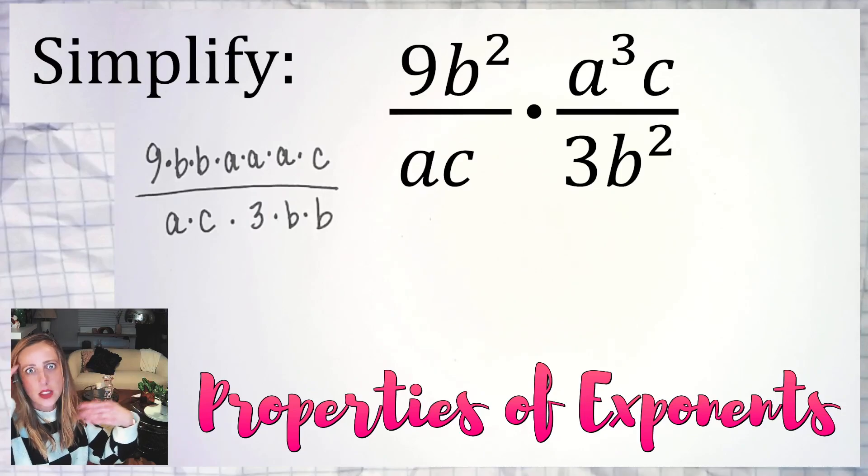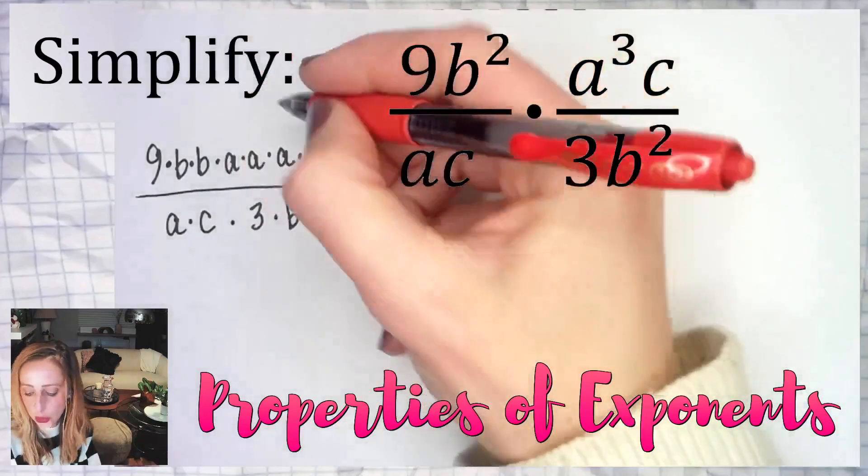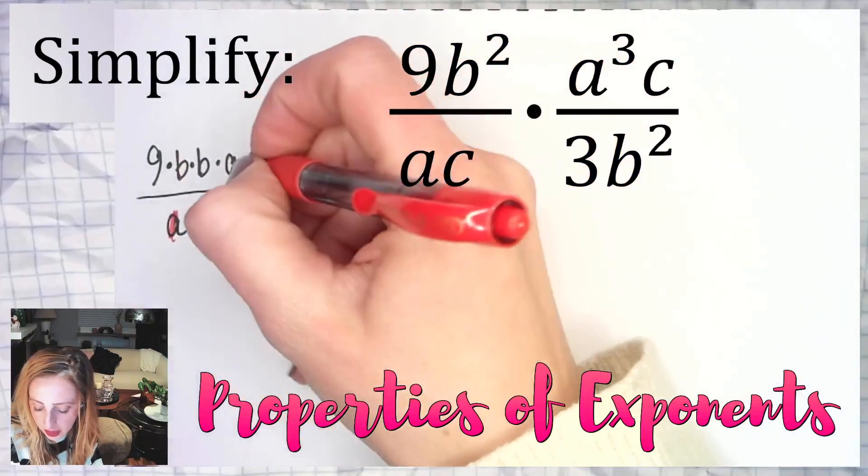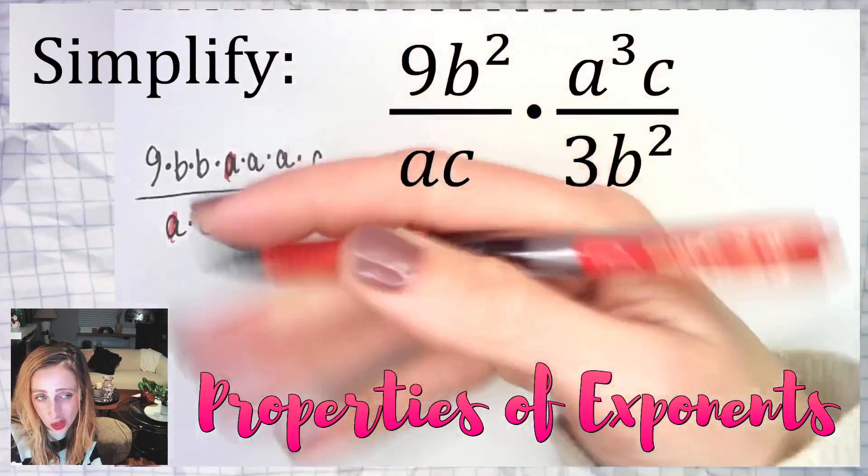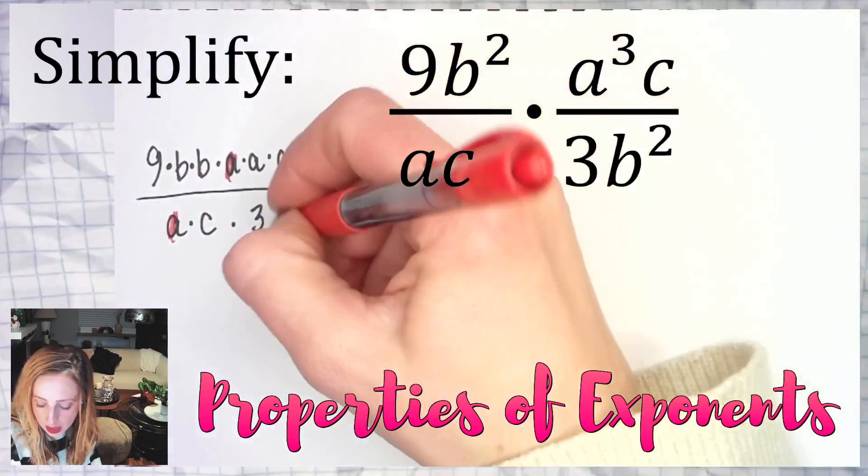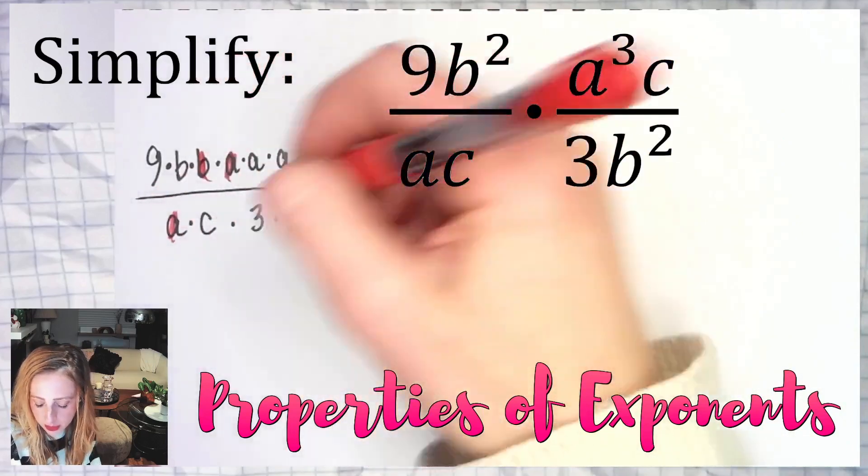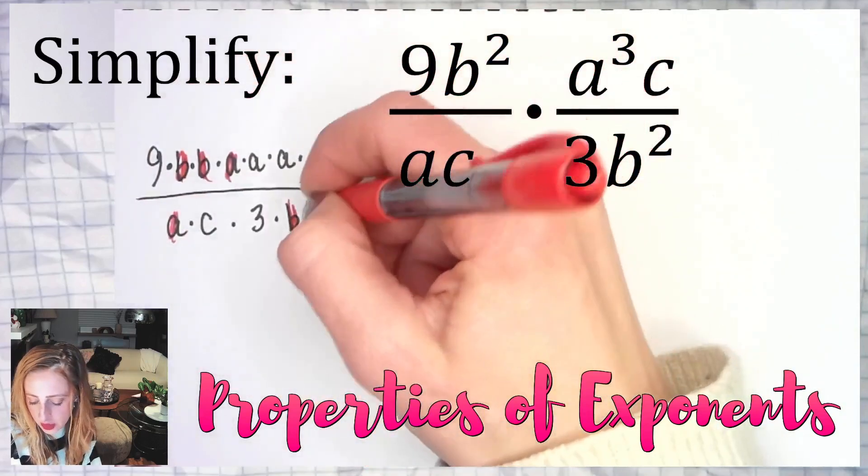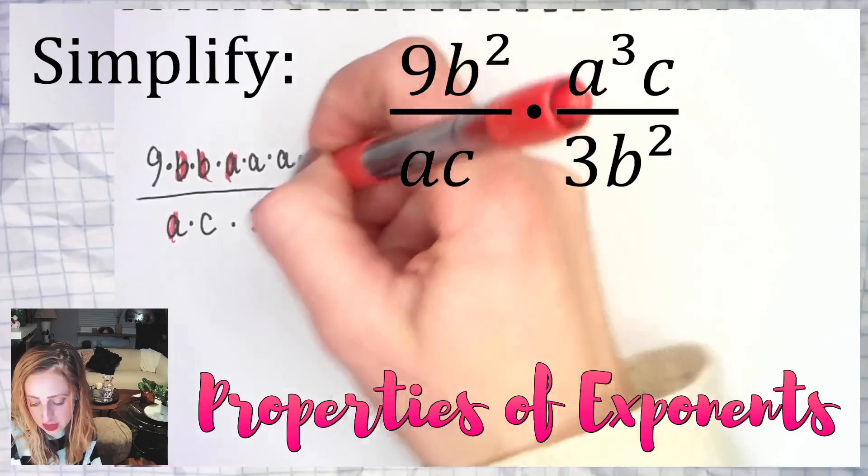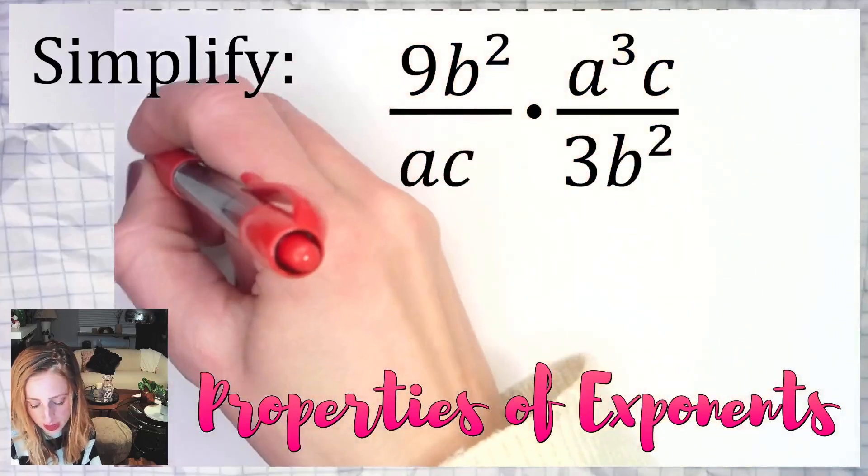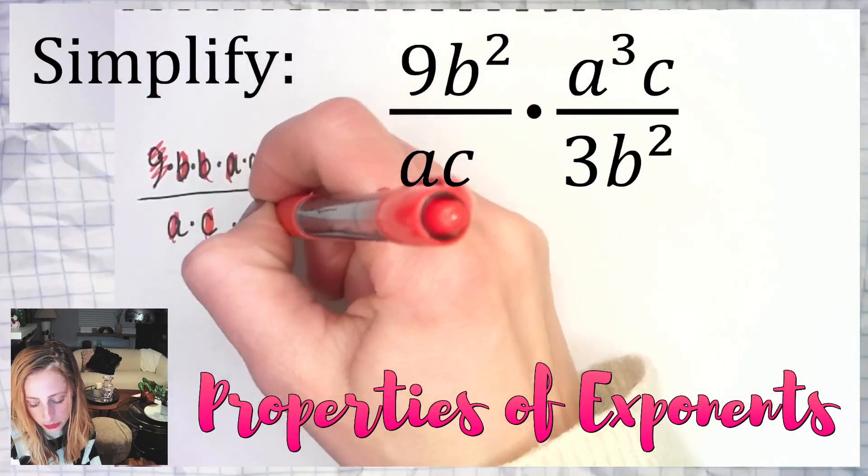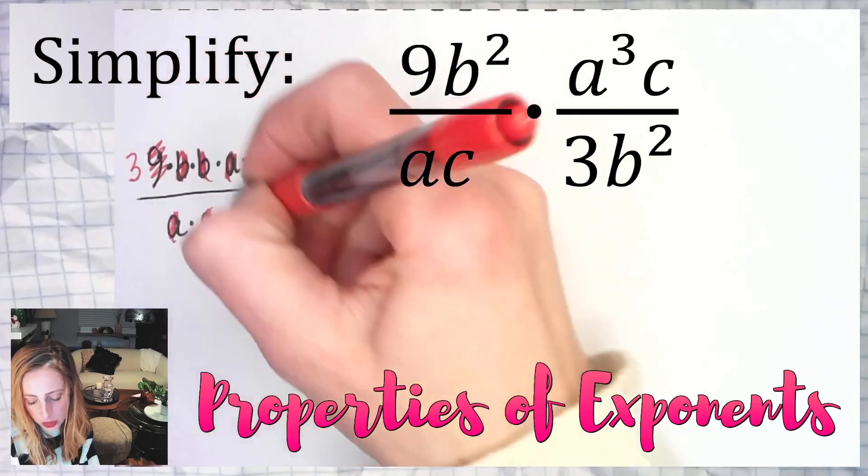Now anything divided by itself is one, so if I look over here I have an a divided by an a that's really one so I don't need to write it. I have a b divided by a b right there. I have another b divided by a b right there. I have a c divided by a c right there. I have nine divided by three which reduces to three and one.